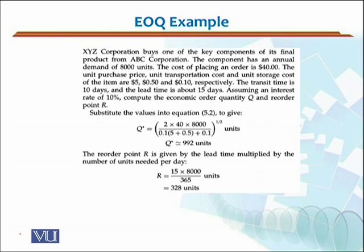So, unit purchase price is $5. Transportation cost is $0.50. Unit storage cost per unit is $0.10.